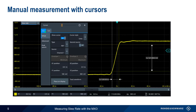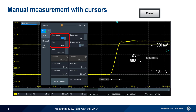Manual slew rate measurements are made using cursors, which are accessed by pressing the cursor button on the front of the MXO, or by selecting Cursor from the main menu. The first step is verifying that cursors are enabled and that type is set to X and Y. Our waveform in this example rises from 0 volts to 1 volt, so our high and low levels will be 900 millivolts and 100 millivolts, and delta V will be 800 millivolts. Next, we position the Y cursors at these voltage levels. Note that Track Waveform must be disabled to set these values numerically.